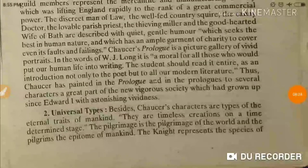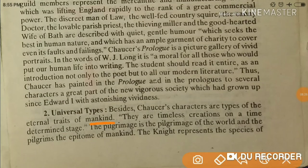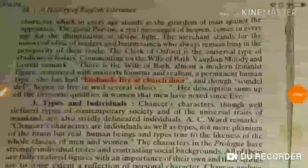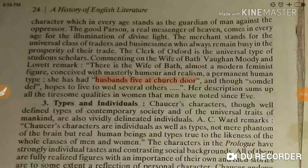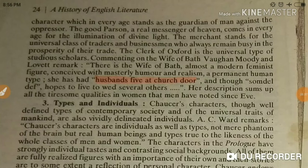We can talk about two types of characters. First are the pilgrimage characters. The Knight is a character which in every age stands as the guardian of man against the oppressor — the good person, a real messenger of heaven. You can categorize the characters into types.